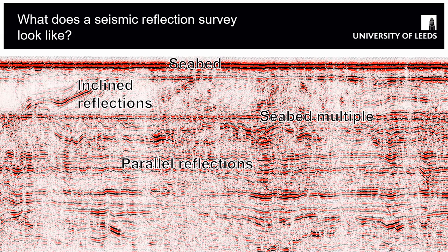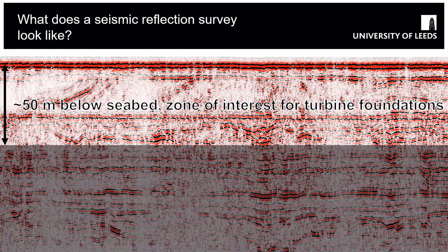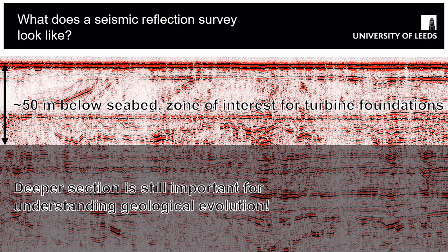You also have what's called the seabed multiple, which can be rather annoying in shallow seismic datasets because it cuts across the entire dataset and can obscure actual data. The zone of interest for offshore wind farms is around 50 metres below the seabed. On Dogger Bank, for example, Haliade-X wind turbines — 13 megawatts and 250-odd metres tall — need foundations 40 metres deep and 10 metres wide. We still need to understand the deeper section because it provides the geological context for the upper section, and you build up a geological evolution by starting at the beginning.